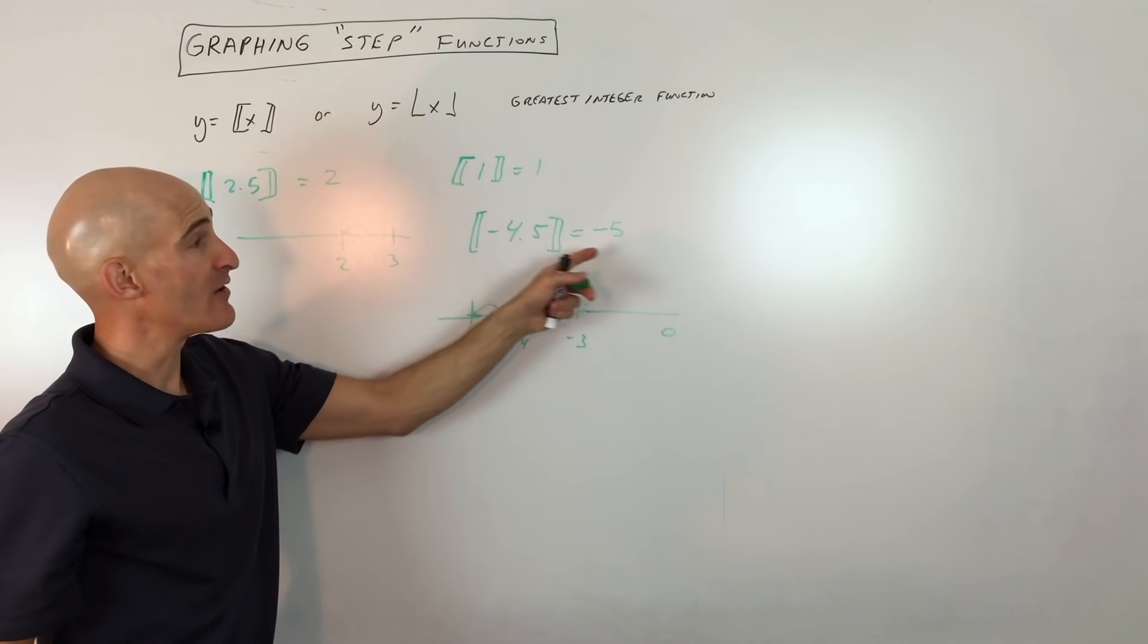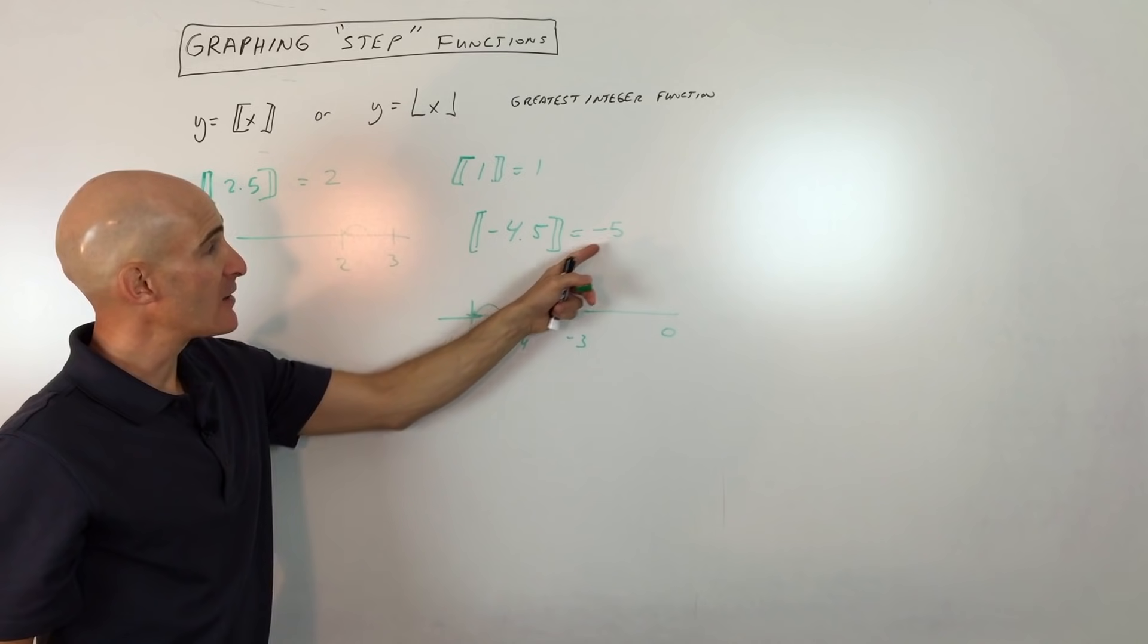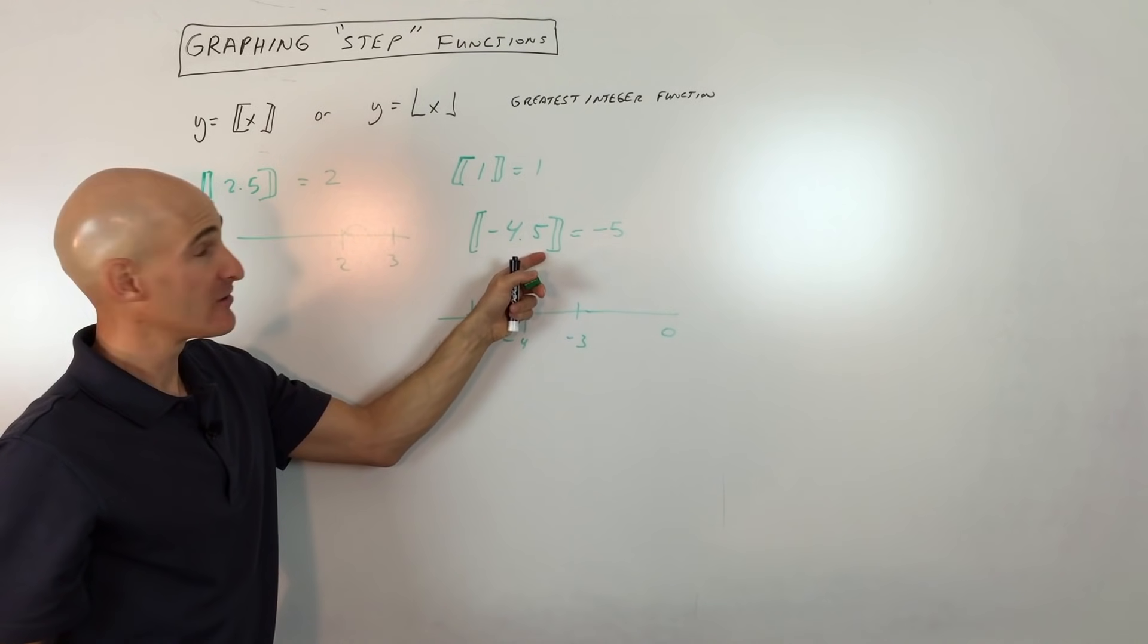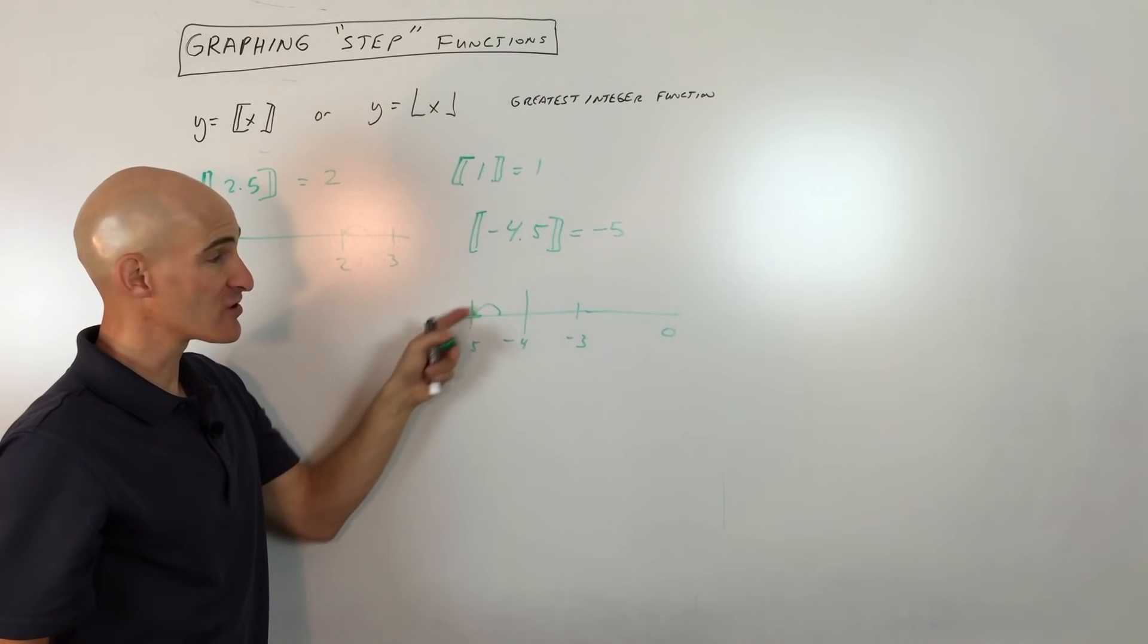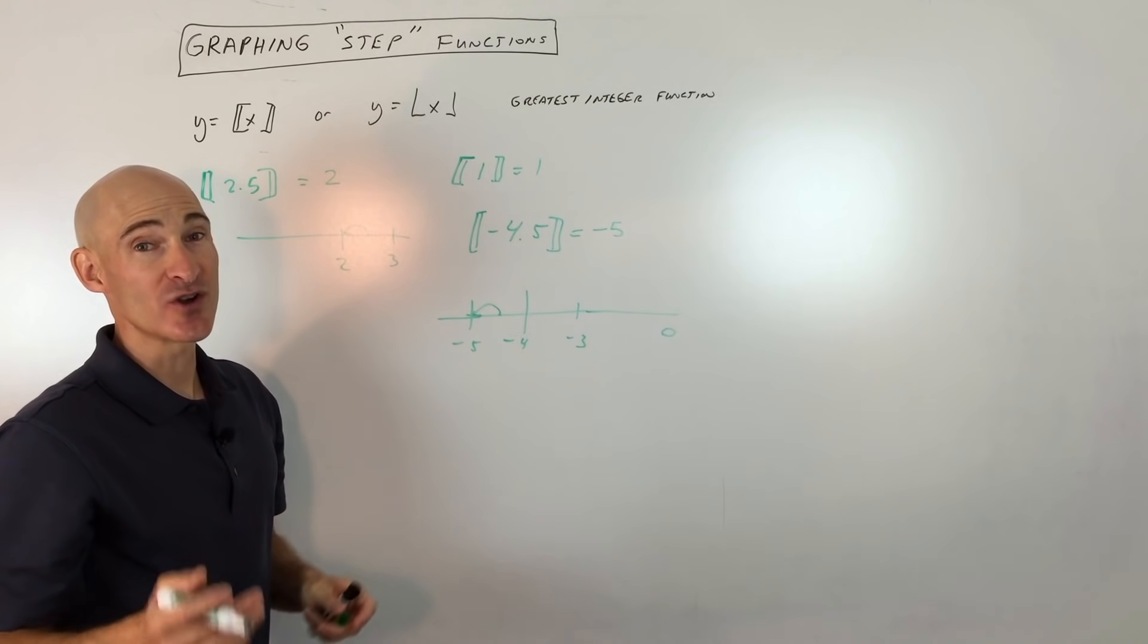So are you with me so far? It looks like the number is getting larger. And you said, hey, wait a second, Mario, you said we round down. Well, you are rounding down. Negative 5 is actually smaller than negative 4.5 because it's further to the left on the number line.